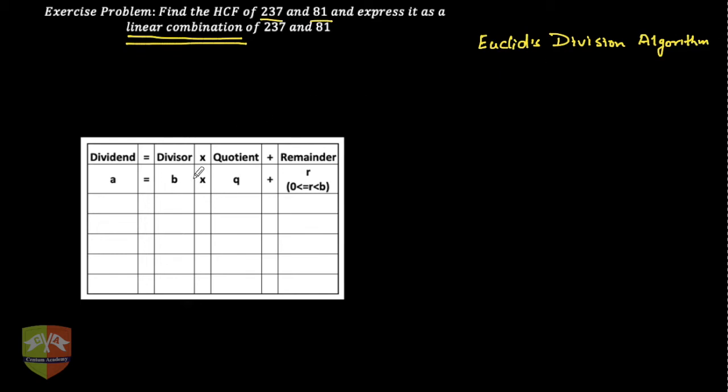Let's start. In this case a is 237, the bigger of the two integers becomes a, then b is 81. Let us start the algorithm. Hence, 237 is equal to 81 into how many times? 81 will go into 237 clearly 2 times, since 80 times 3 is 240 which is bigger. So 2 times 81, let me write it down here.